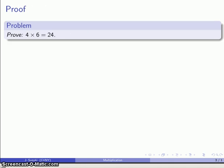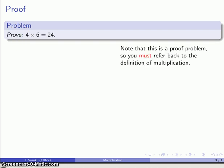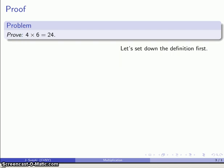Alright, so let's take a look at a proof. Let's take a look at a typical problem: Prove 4 times 6 is equal to 24. And again, taking this problem apart, note that it is a prove statement, which means we're going to want to go back to the definition. So we can go ahead and put that definition down first. a times b is the sum of a b's.